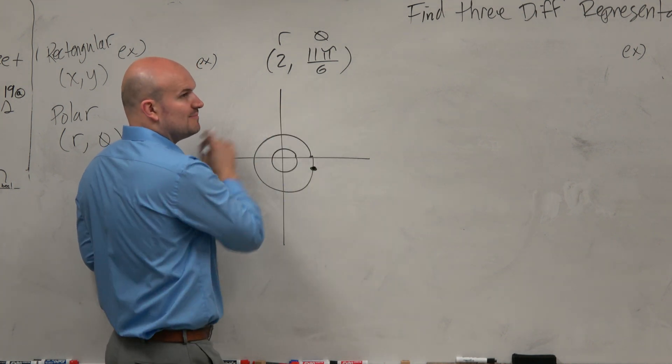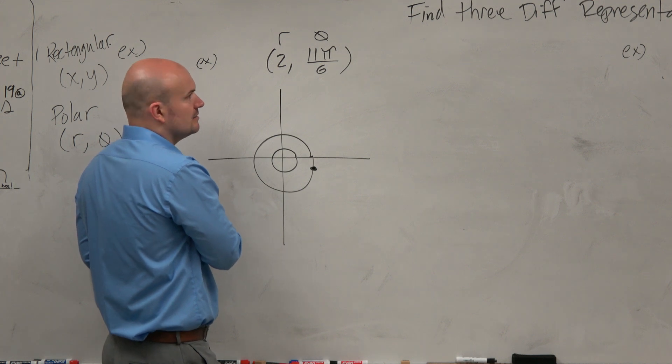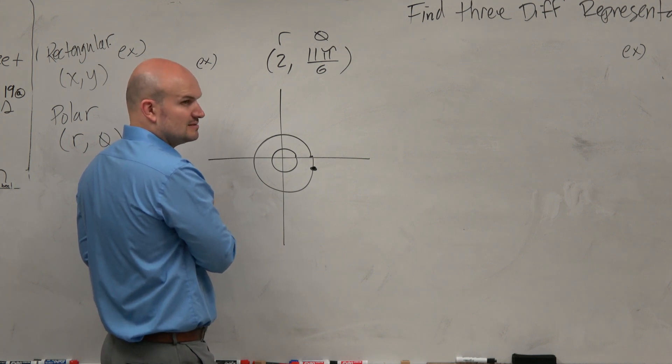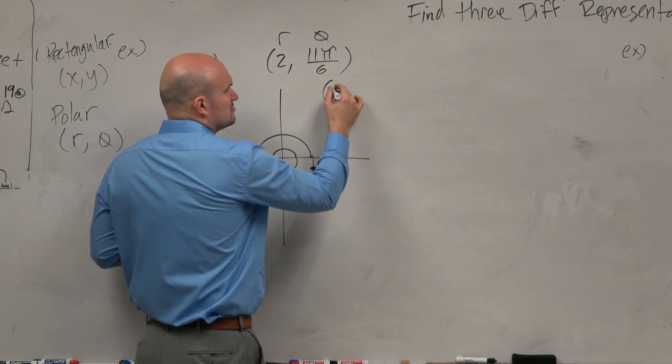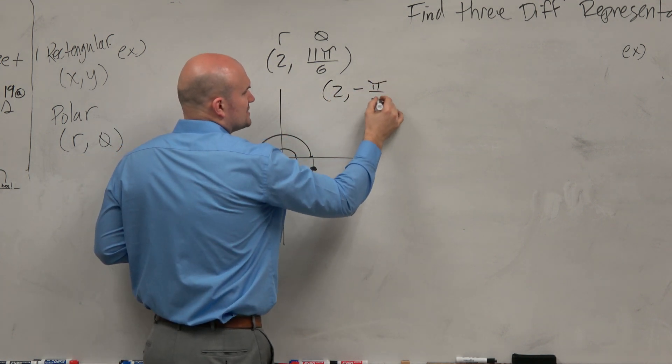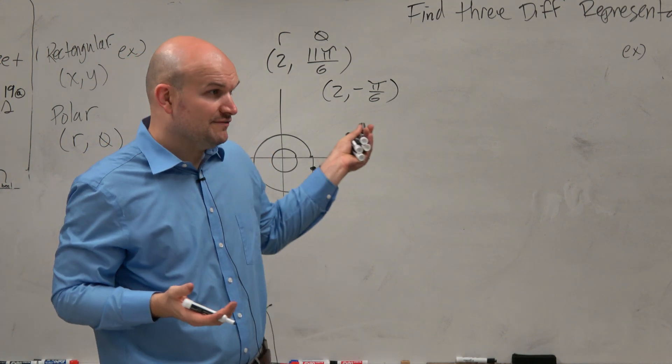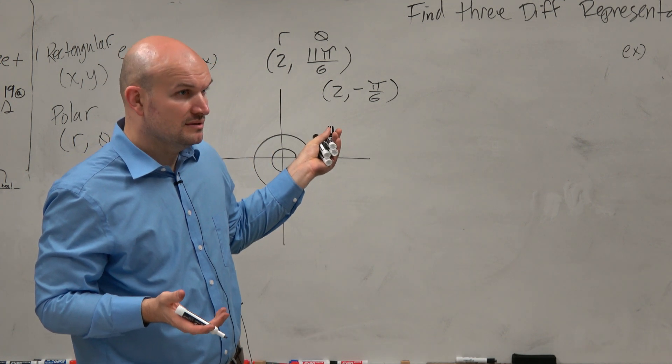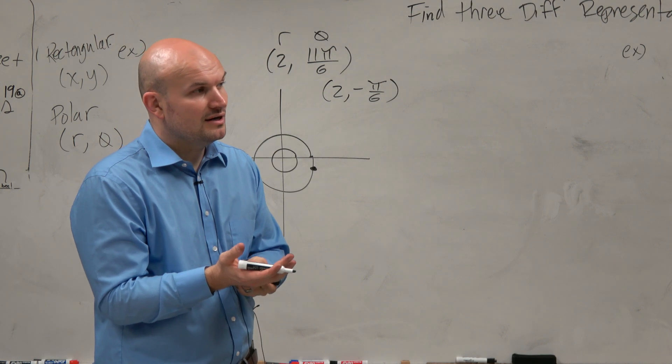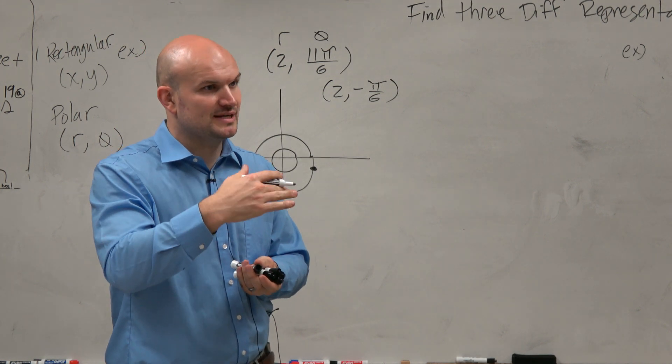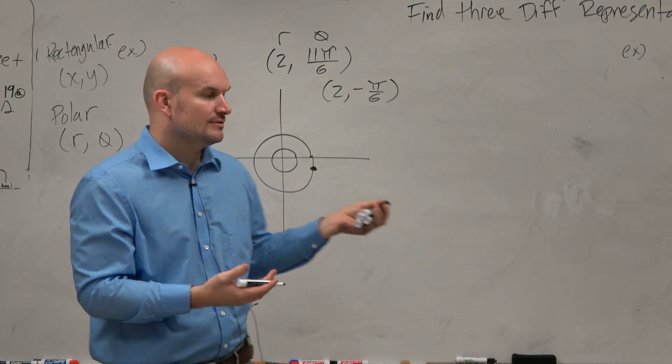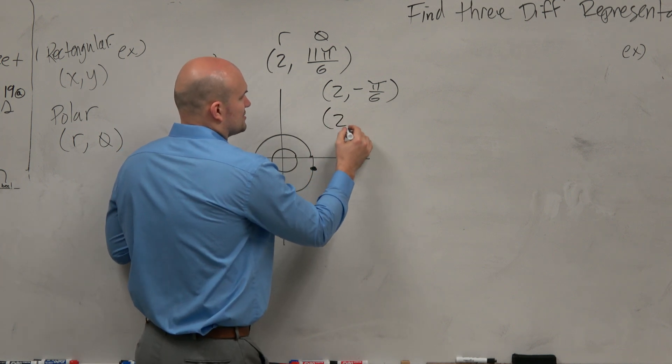So now we could use 11π over 6. But in reality, do we have to use 11π over 6? No. Why don't we just use 2, negative π over 6, right? Does that give you the same point? Yes. And then from there, we know that there's infinitely many answers because all you got to do is add and subtract 2π, right? So I mean, I'll just throw out a whole bunch of them. We could do negative 13π over 6.